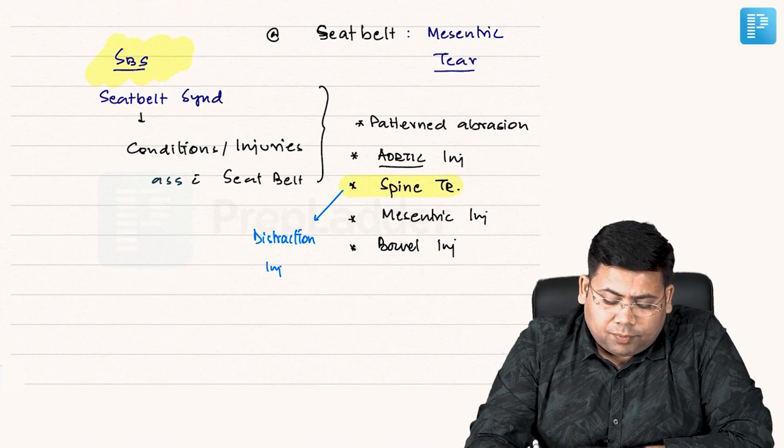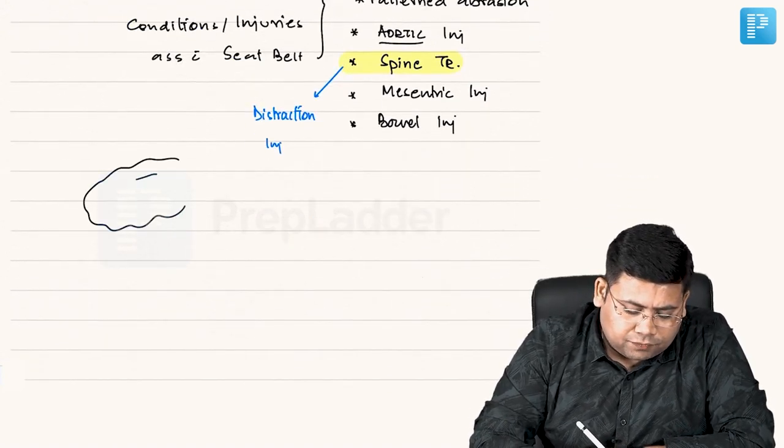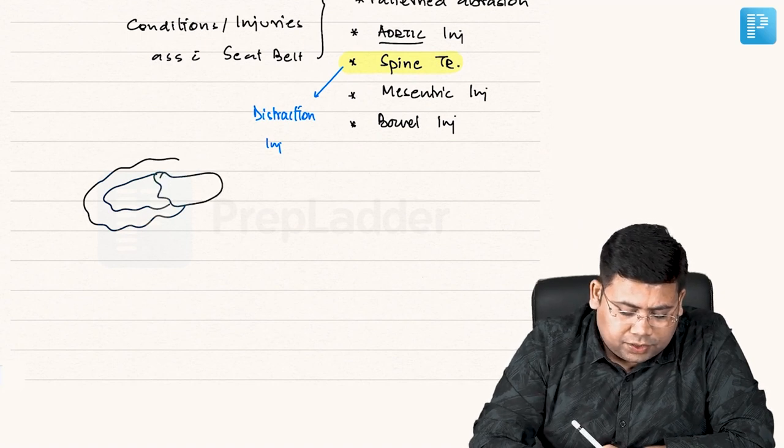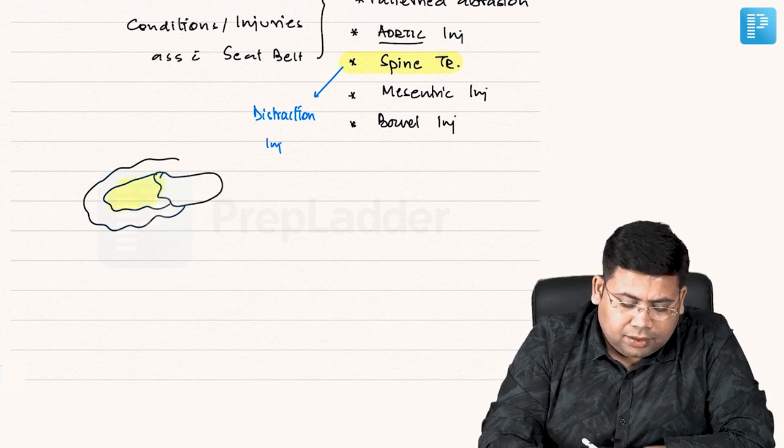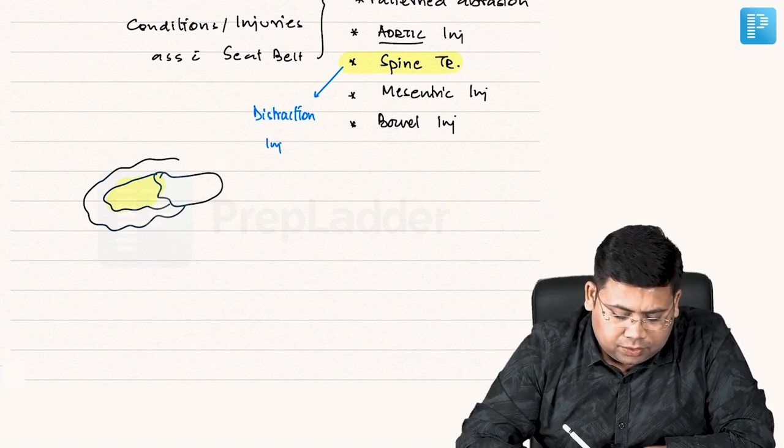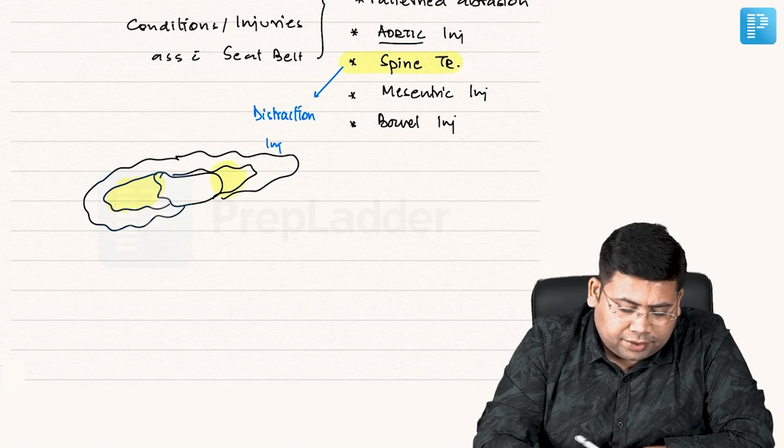Now when we talk about mycentric tear, the classical mycentric tear that we get - so this is the bowel and this is the misentry. Here you actually have the tear. If you see, this is again misentry and you are having a tear here.